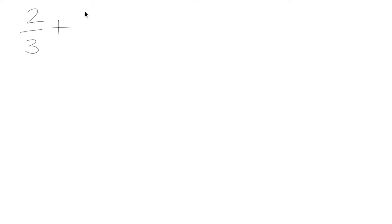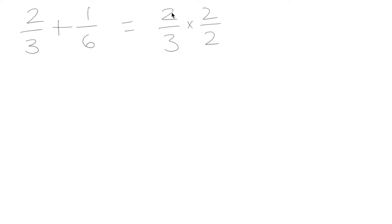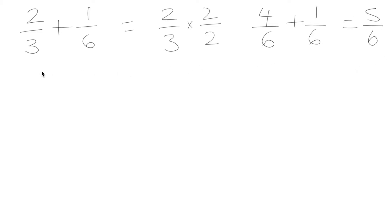Now what if we had 2 thirds plus 1 sixth? We know that when we're adding fractions, we can only add them when we have a common denominator. So we convert these into a form where both have 6 as a denominator by multiplying 2 thirds by 2 over 2, which is the same as multiplying by 1. That gives us 4 over 6. Now we have 4 over 6 plus 1 over 6, which equals 5 over 6. That is our most simplified form.